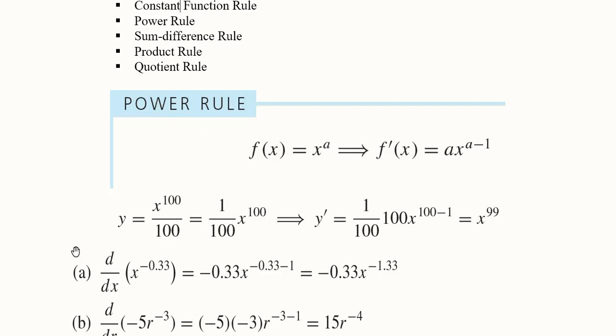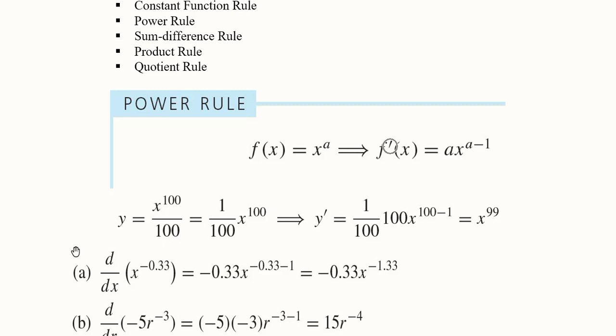Let's start with the power rule. If we have a power function where the variable is in the base and the superscript is a constant value a, when we take its derivative the left-hand side turns into f'(x). The right-hand side becomes an expression with the power a in the beginning, multiplied by x raised to a minus one — that is, one deducted from the original power.